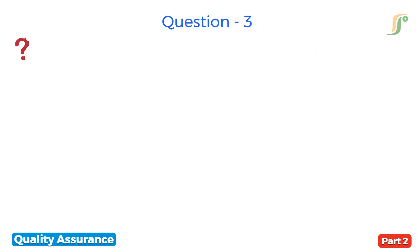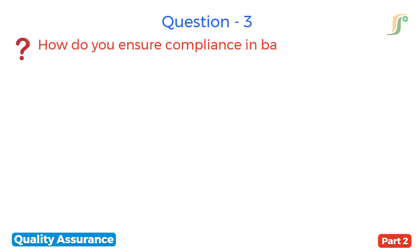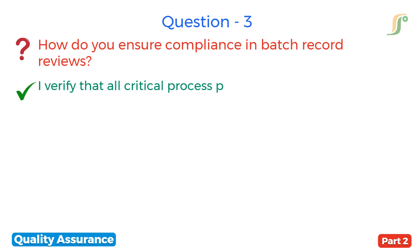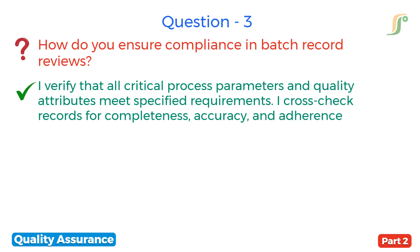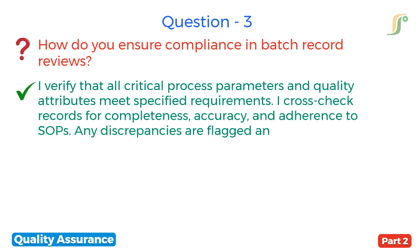The third question is: how do you ensure compliance in batch record reviews? I verify that all critical process parameters and quality attributes meet specified requirements. I cross-check records for completeness, accuracy and adherence to standard operating procedures. Any discrepancies are flagged and investigated promptly.